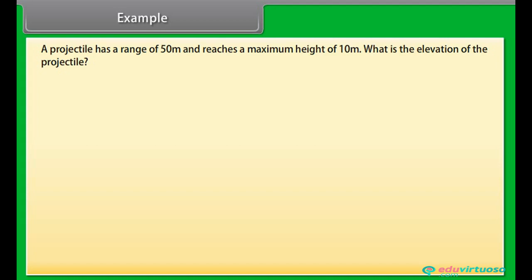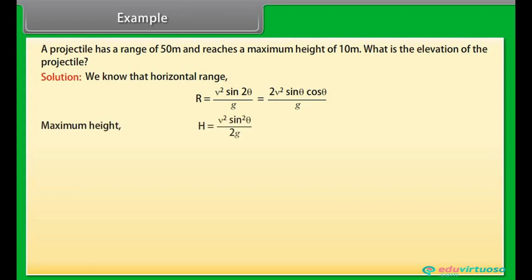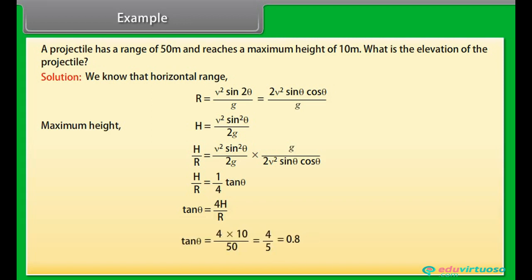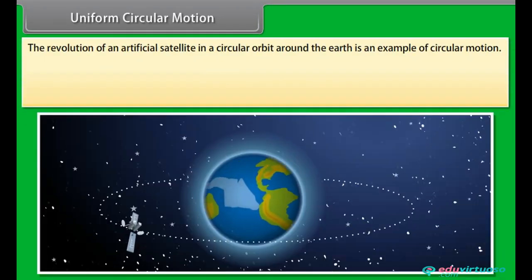Example. Let's take an example of projectile motion. A projectile has a range of 50 meter and reaches a maximum height of 10 meter. What is the elevation of the projectile? Let's see the solution. We know that horizontal range is equal to product of nu square and sin 2 theta divided by g. We derive the relation between height and range is given by H upon r is equal to 1 by 4 tan theta. On calculating this equation, we get the value of theta equals to 38.66 degree.